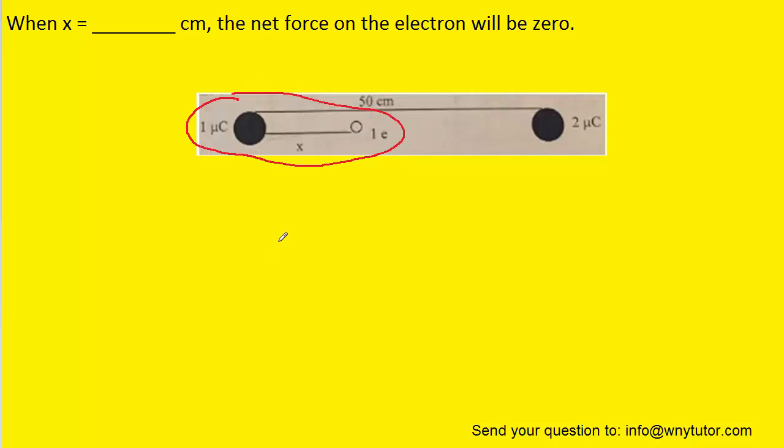Now because they are both charged objects, there will be a force exerted on the electron. And that force is an electrostatic force equal to a constant multiplied by the charge of the electron, multiplied by the charge of this object here, which we can just call QA, divided by the distance between them squared. Now the distance between them is actually x, so it will be x squared.